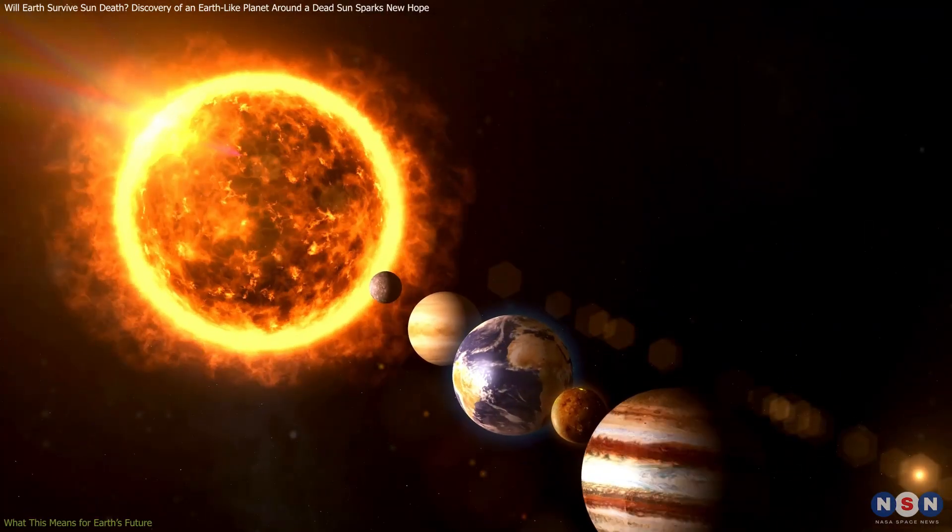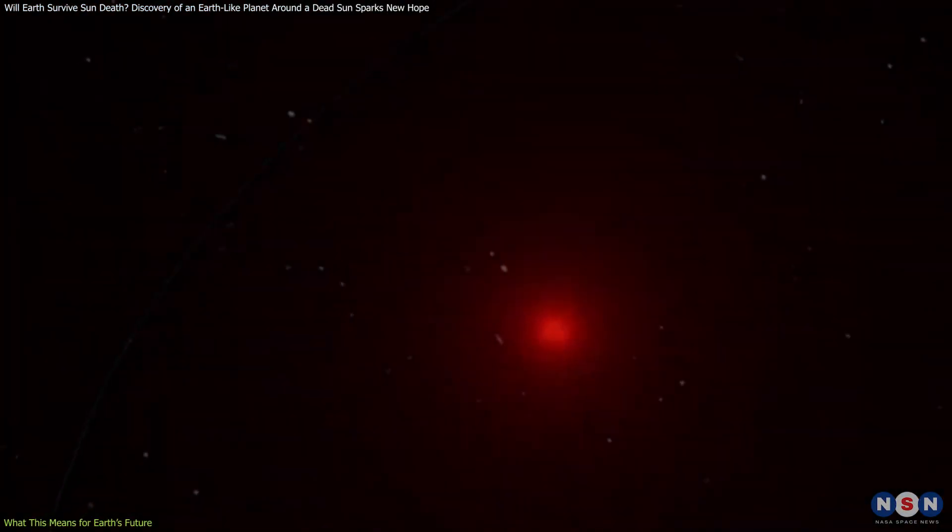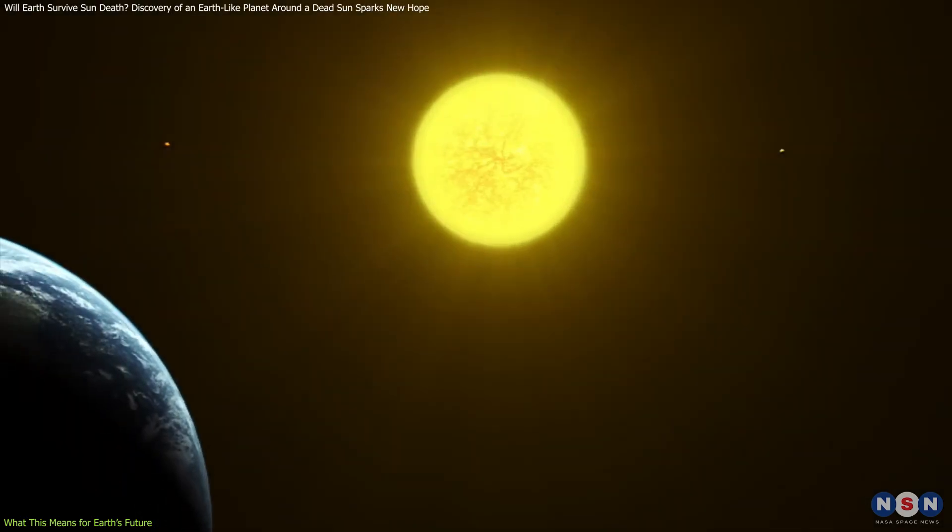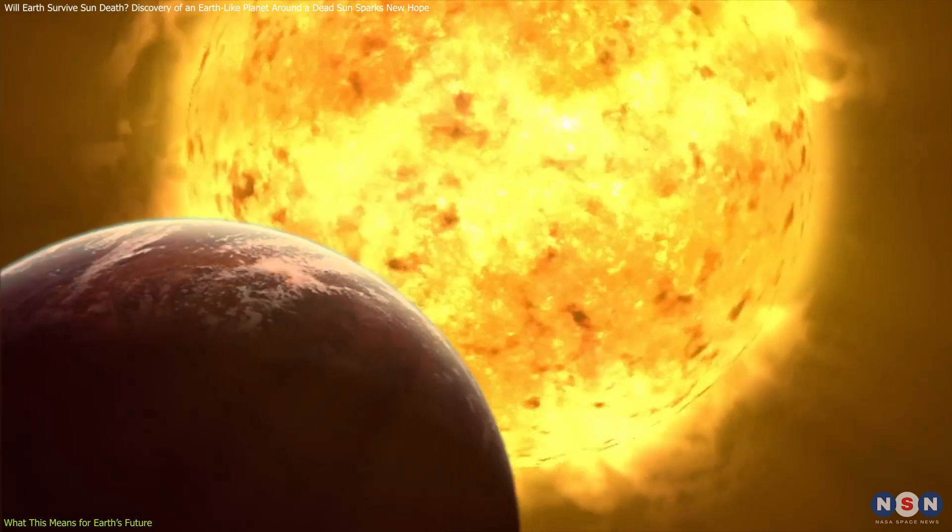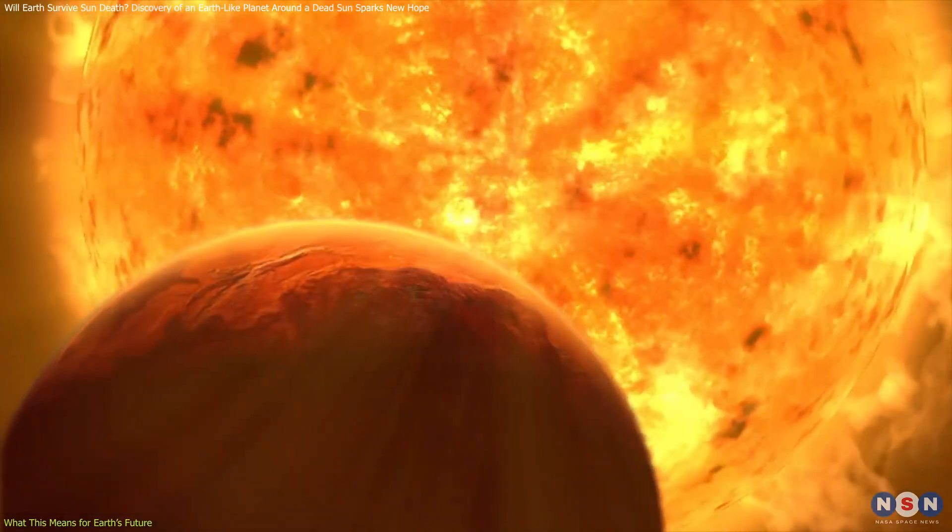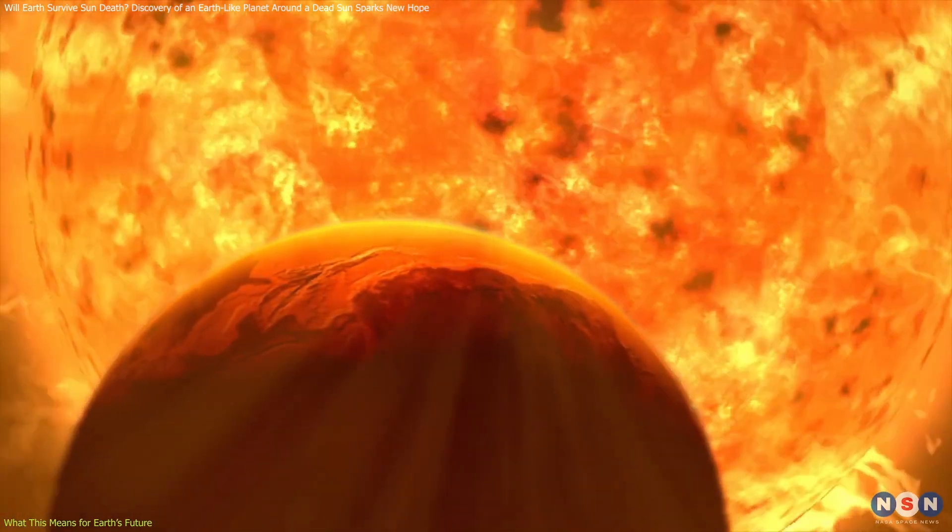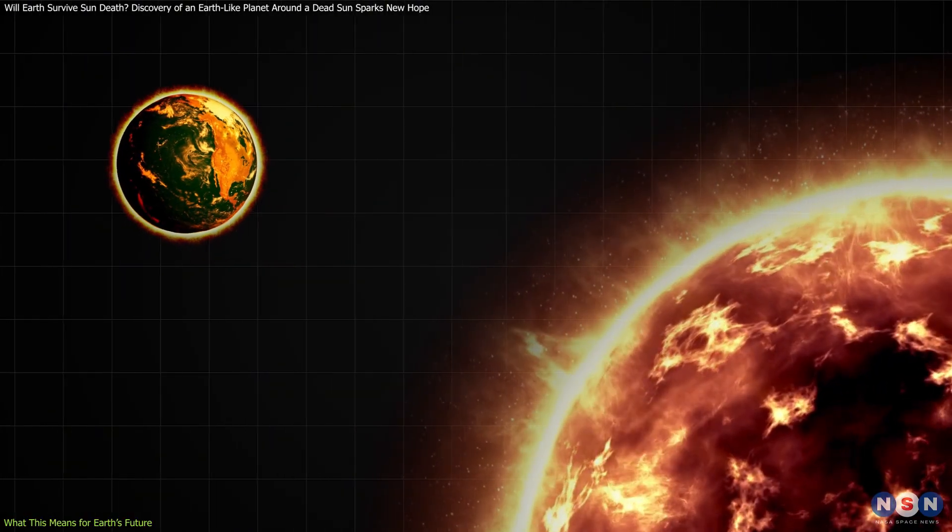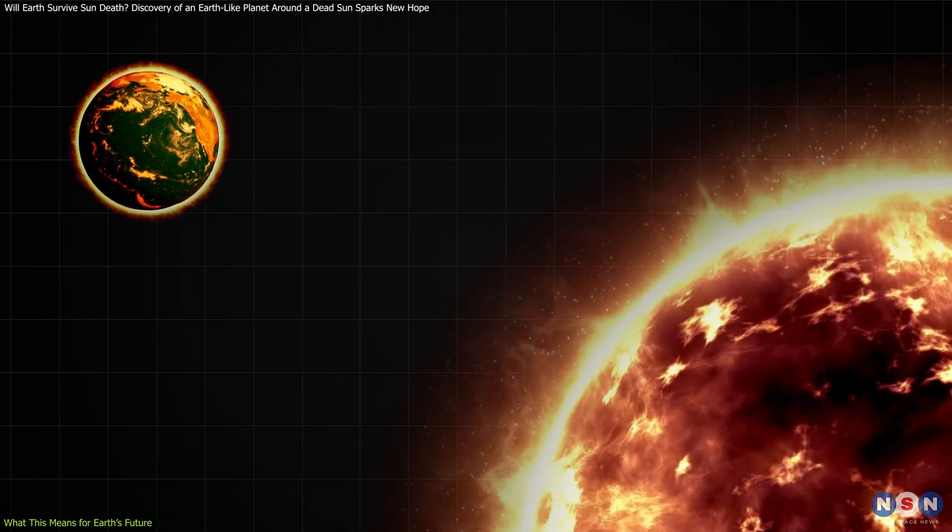Our Sun, like all stars of its type, will eventually expand into a red giant in about 5 billion years, drastically altering the inner solar system and likely consuming Mercury and Venus. Earth's fate is uncertain, but it might avoid destruction by migrating outward as the Sun loses mass during this red giant phase.